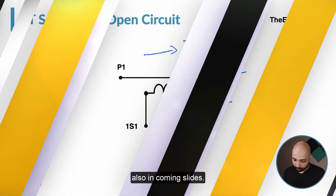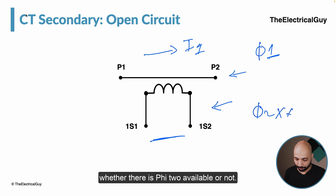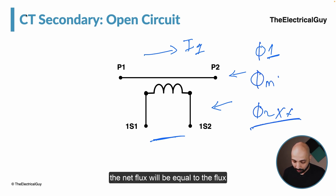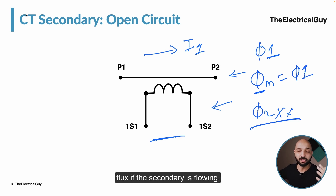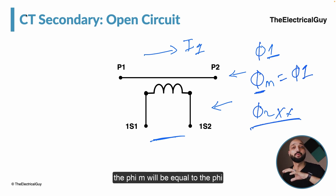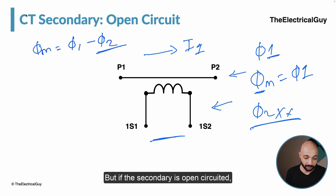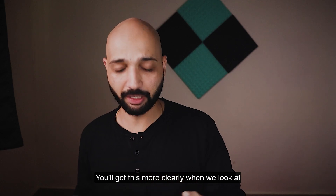There will always be phi_1 available whether there is phi_2 or not. If the secondary is open circuited, the net flux phi_m equals phi_1, because there is no opposing phi_2. Normally phi_m equals phi_1 minus phi_2, but with open secondary there is no phi_2. So phi_m equals phi_1, which can be very high, causing core saturation and a very high secondary voltage.